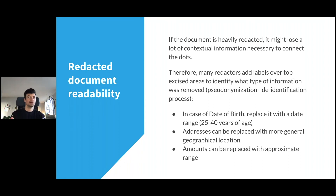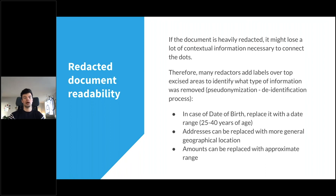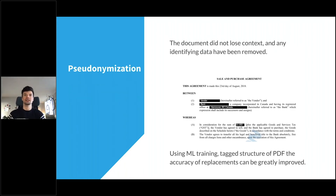Many redactors can add labels on top of excised areas to identify what type of information was removed. This process is called pseudonymization — the de-identification process. For example, a date of birth can be replaced with an age range like '25 to 40 years of age,' addresses can be replaced with a more generic geographical location, and amounts can be replaced with an approximate range. In a pseudonymized document, context is preserved — we can see we're talking about a vendor and a bank in Vancouver, BC, Canada, and we know the currency is USD.